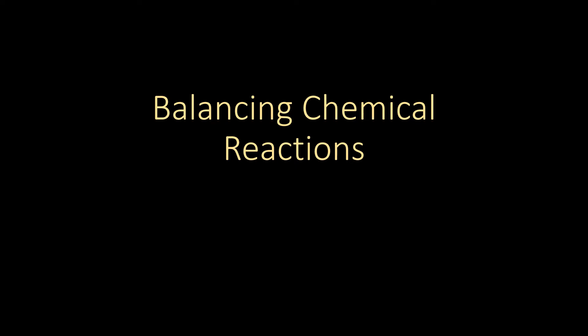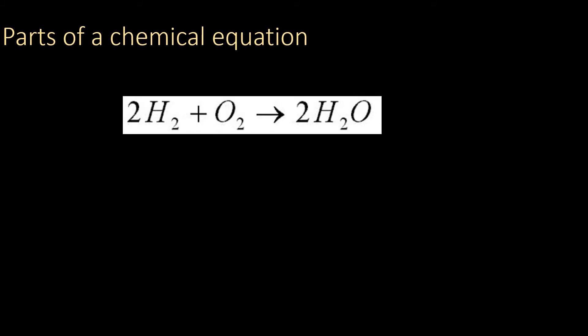Okay, balancing chemical equations. First we need to know what is a chemical equation. It is representative of what is happening in our reactions. So what do these symbols mean? We have our yield sign. On the left side of our yield sign, our arrow, we have reactants.